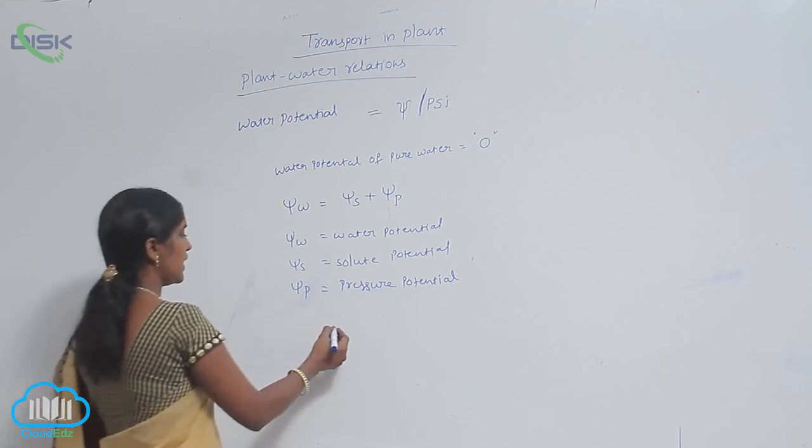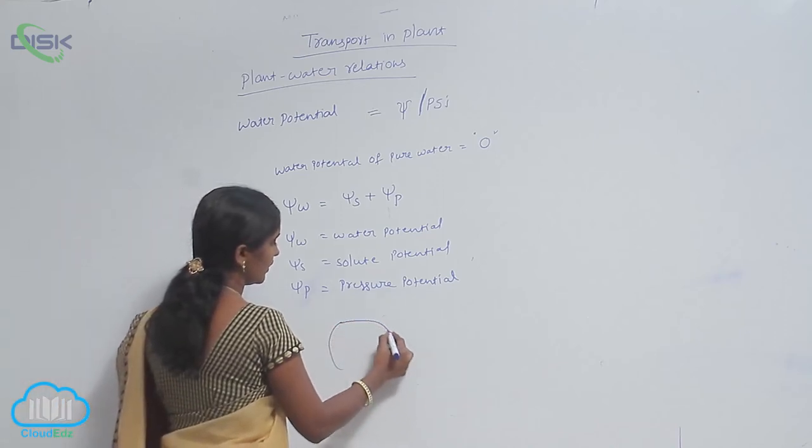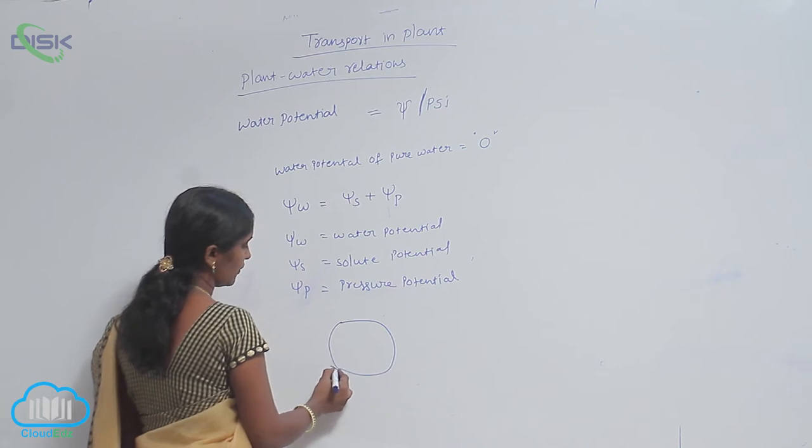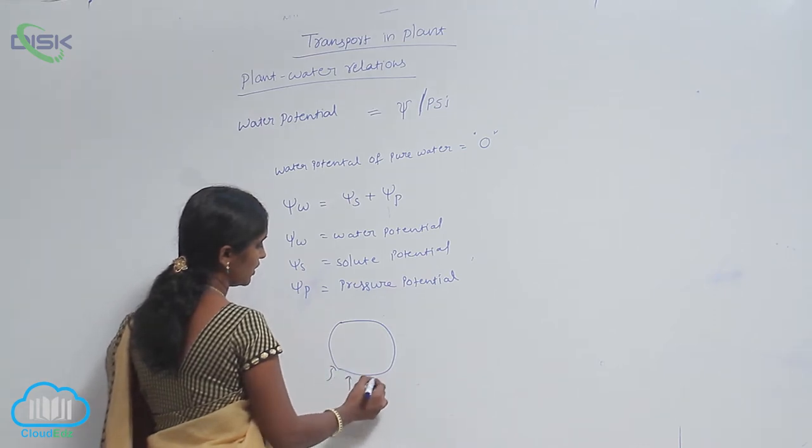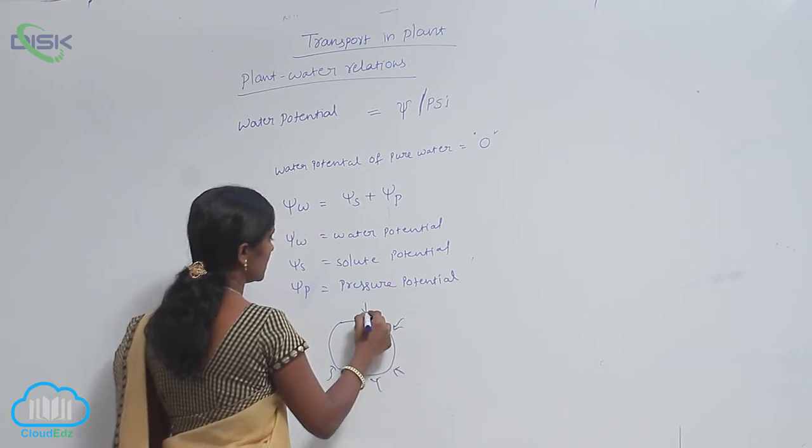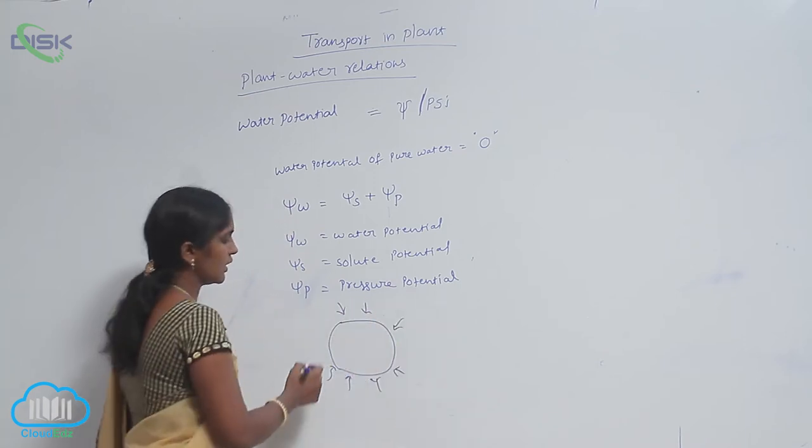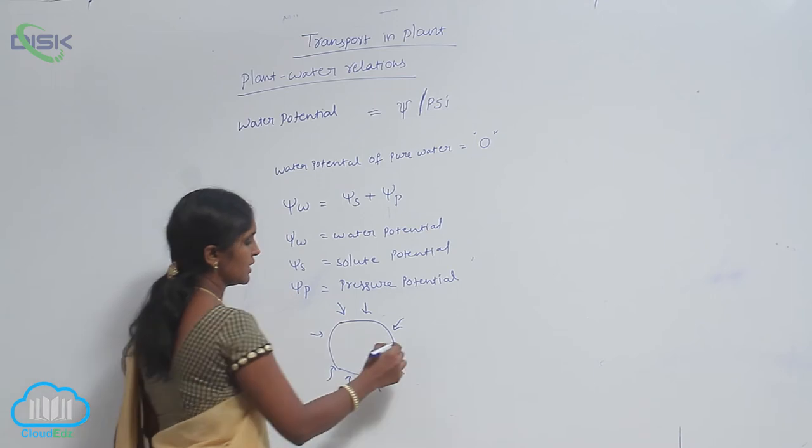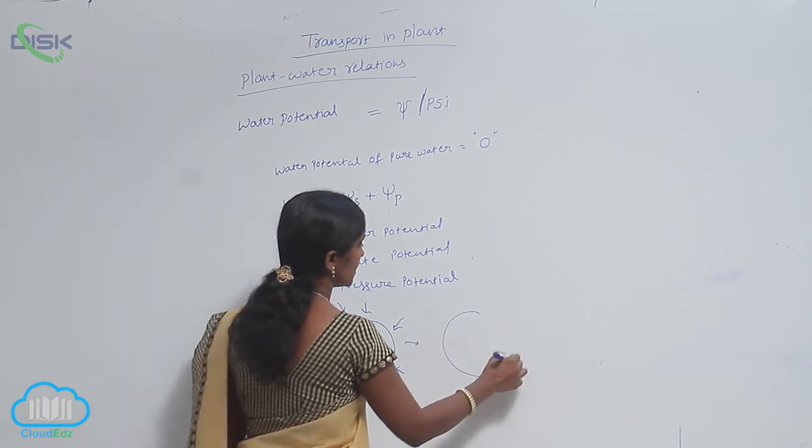In the system, the plant cell, when it absorbs water, it becomes turgid. It means the diffusion of water inside of the cell. The cell becomes a turgid cell.